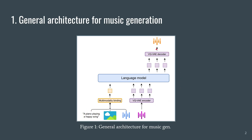Then we have the Vector Quantized Variational Autoencoder. The encoder can be used at inference time to condition the generation by providing some input music that we want to continue with the generation. At inference time, the VQ-VAE decoder can be used to take the discrete codes generated by the language model and generate the final waveform — the final music that we will listen to.